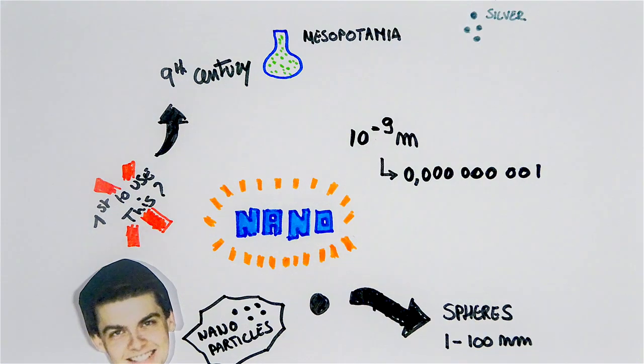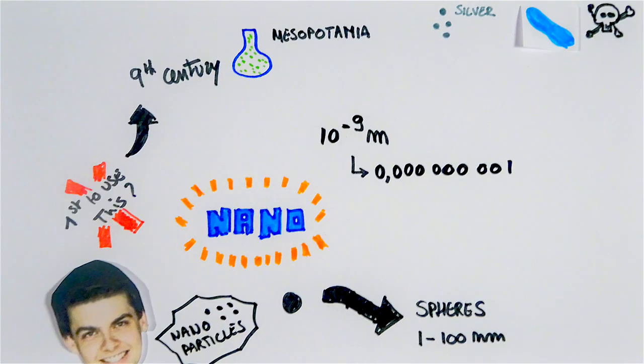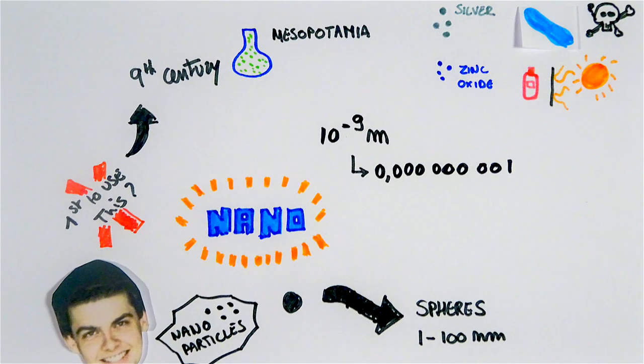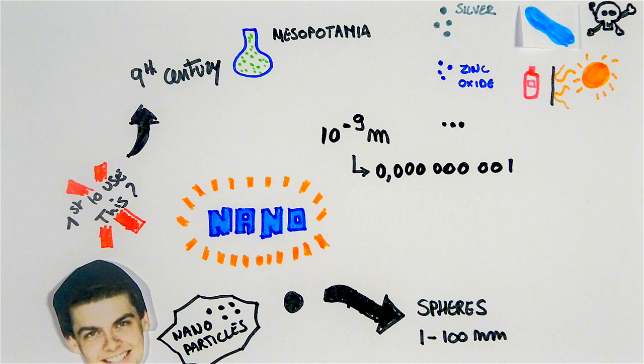But also today we use nanoparticles. For example, in the medical world, we use silver nanoparticles because they have antibacterial properties. And we also use zinc oxide nanoparticles in the cosmetic world, in solar cream, because it protects us from the sun. And there are many, many more applications for nanoparticles.